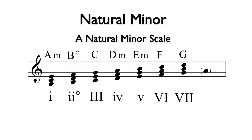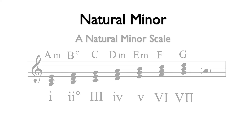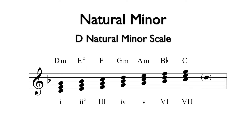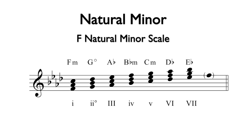Here are all of the triads from A natural minor with their chord names and corresponding Roman numerals. Since the chord qualities in Roman numerals remain the same from one natural minor scale to another, we can transfer these to any other minor key. Here are the triads from D natural minor. Here are the triads from F natural minor.